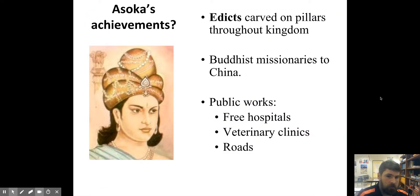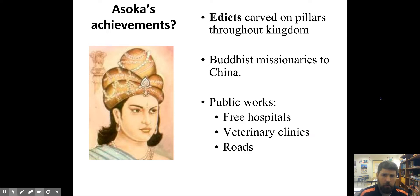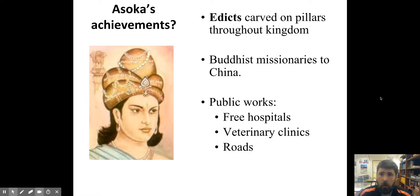Ashoka also established public works in order to help unify India. He built free hospitals. He built veterinary clinics for people's animals. And he built roads — a network of roads — to help unify the kingdom. He put the ancient version of rest stops along the roads so that people could stop and feed their animals, sit in the shade, and take a break from their traveling. All of those things are in keeping with Buddhist ideas about how we should treat each other and how the world should work — valuing life and the lives of other people and trying to make other people's lives easier.